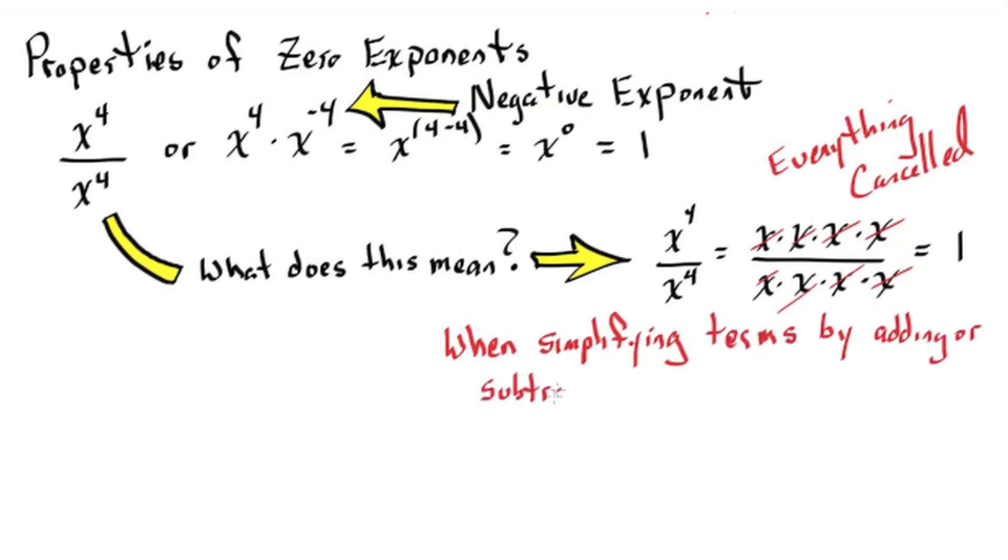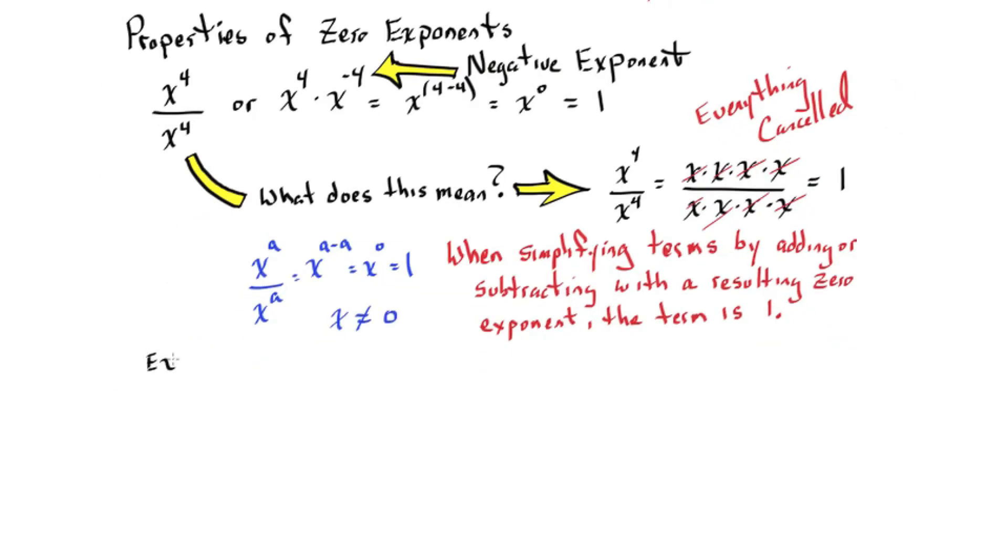When simplifying terms by adding or subtracting with a resulting zero exponent, then the term is one. Note that x cannot be equal to zero because that would be divided by zero.